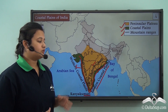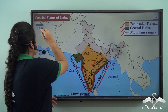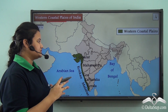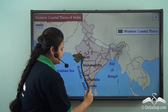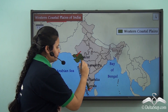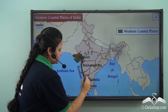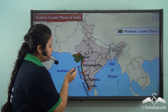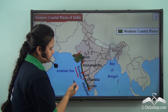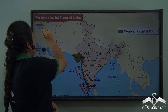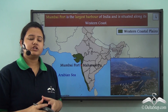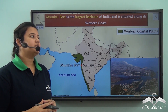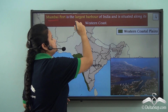Coming to the Western Coastal Plain — it stretches from Gujarat in the north to Kerala in the south, and it passes over the states of Maharashtra, Goa, and Karnataka. The Western Coastal Plain is very long and can be divided into two parts: the northern part is known as Konkan Coast and the southern part is known as Malabar Coast. Also, the Western Coastal Plain is highly indented and here we find some natural harbours. One such harbour is the Mumbai port, which is the largest harbour of India.